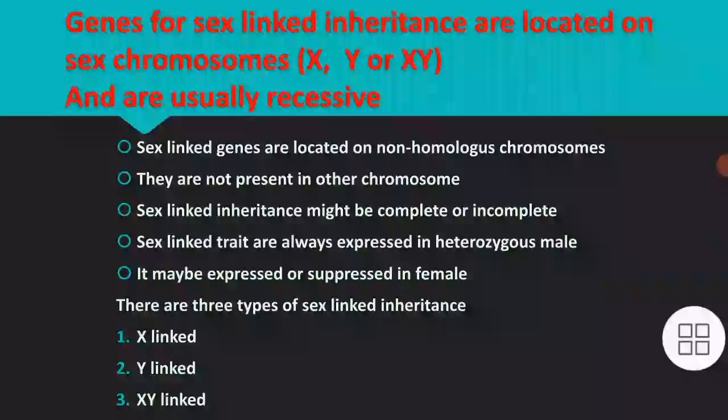Sex-linked inheritance might be complete or incomplete. It is complete if there is no crossing over, but it might be incomplete if there is crossing over. Sex-linked traits are always expressed in the heterogametic male, but they may be expressed or suppressed in the female.